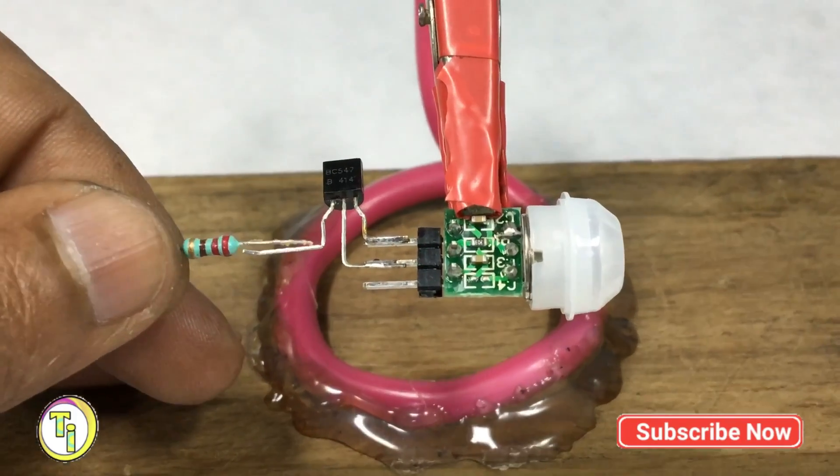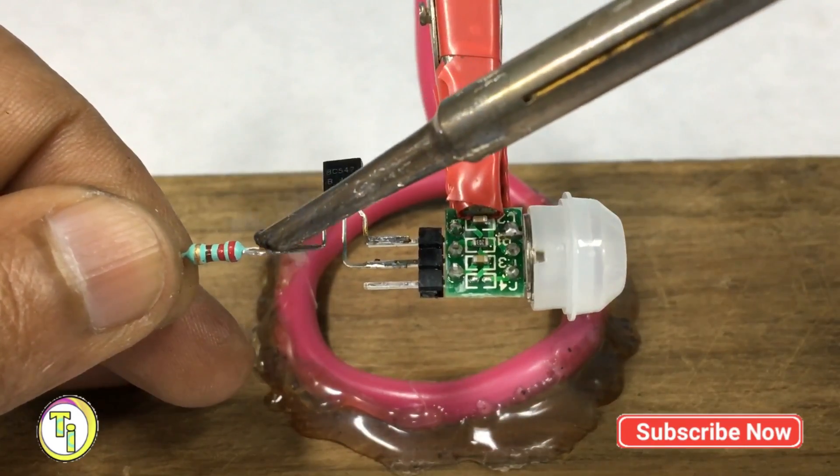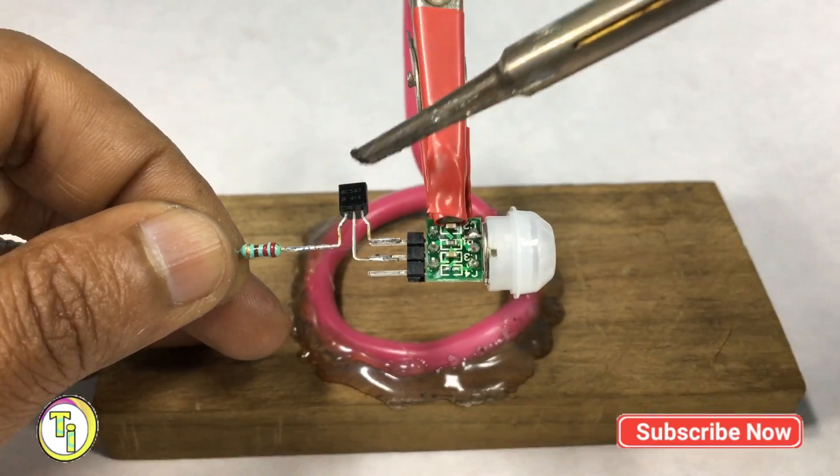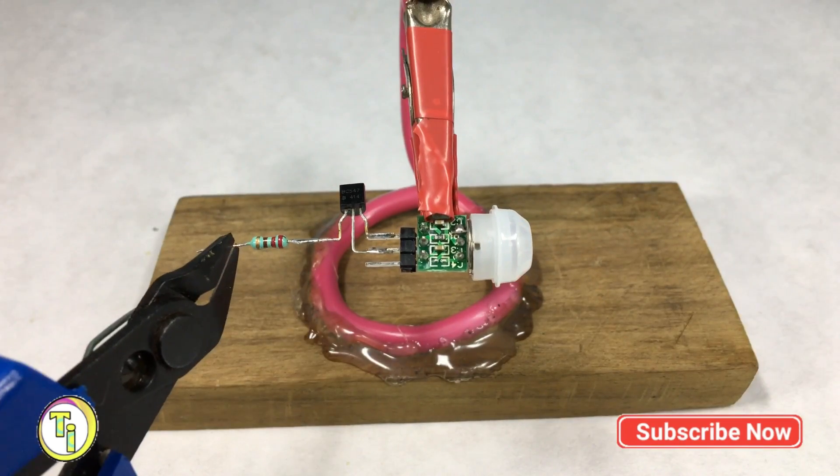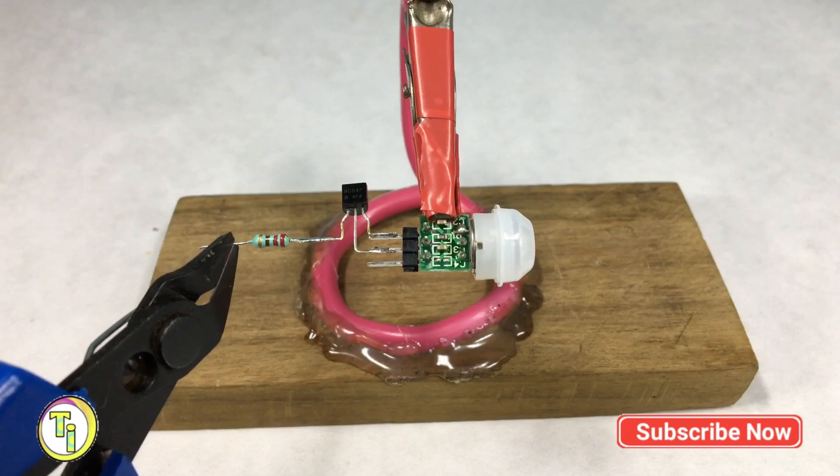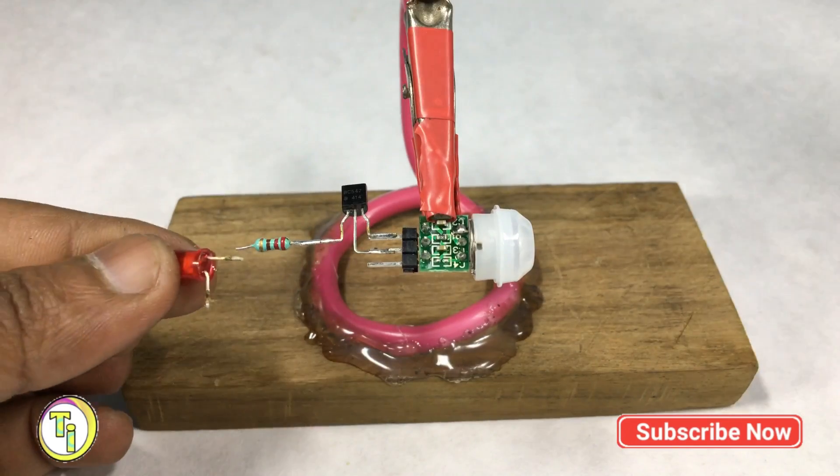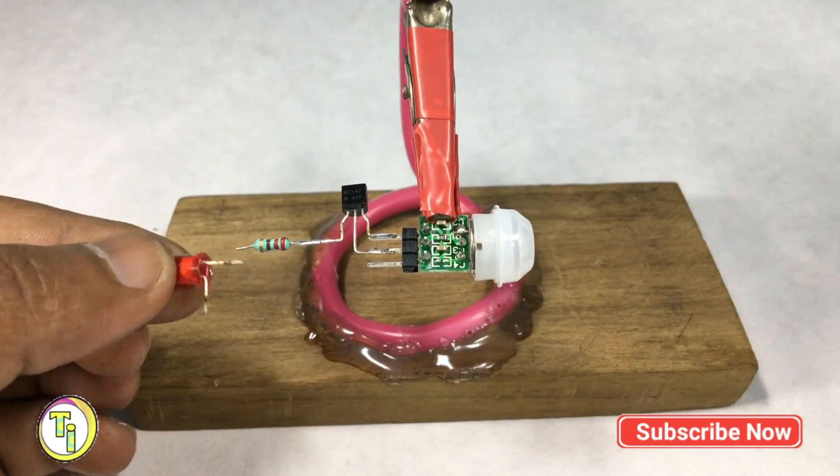Connect the resistor to the collector of the transistor. Connect the LED's cathode pin to the resistor.